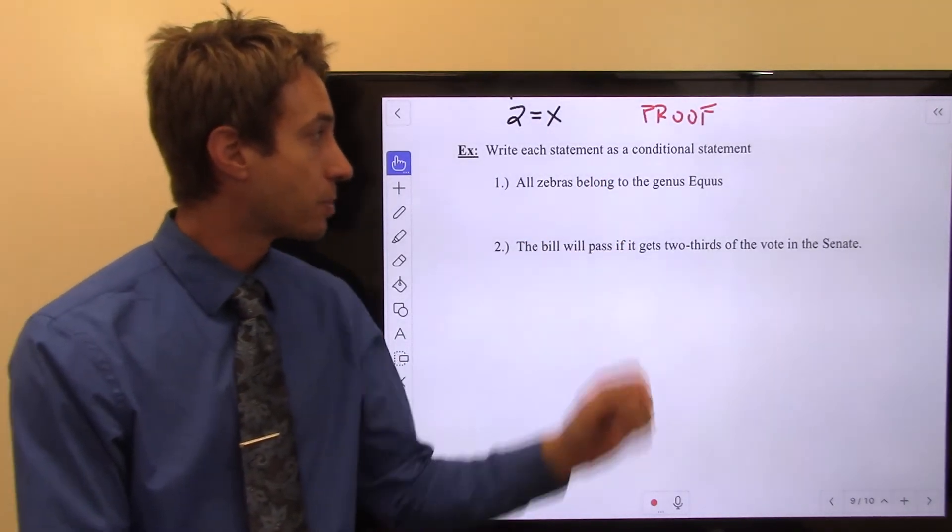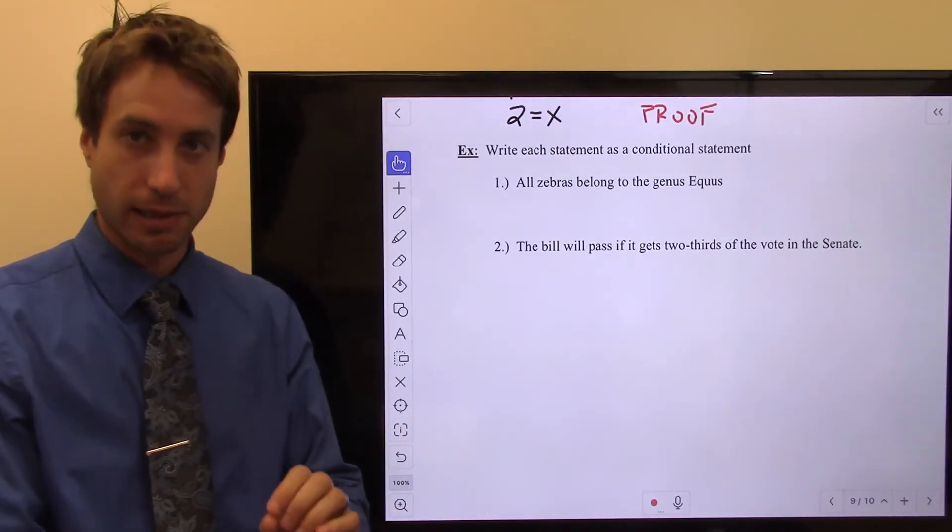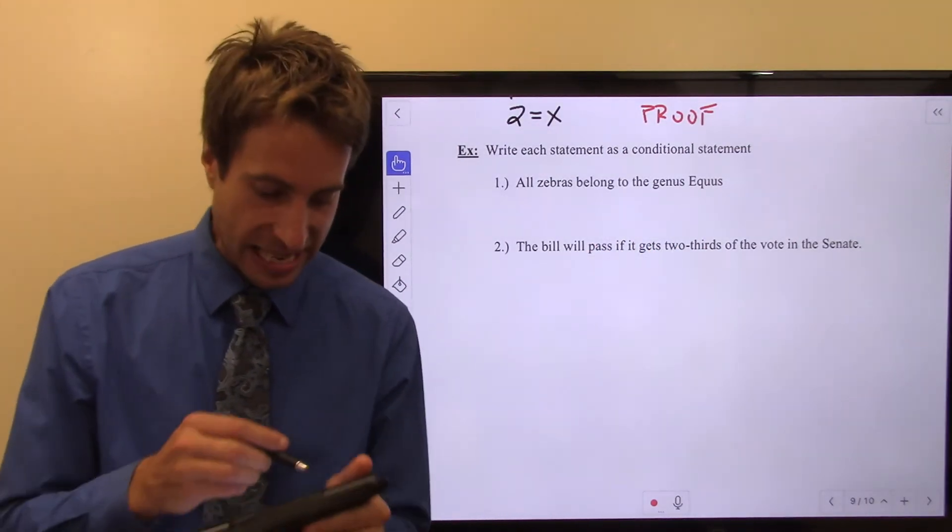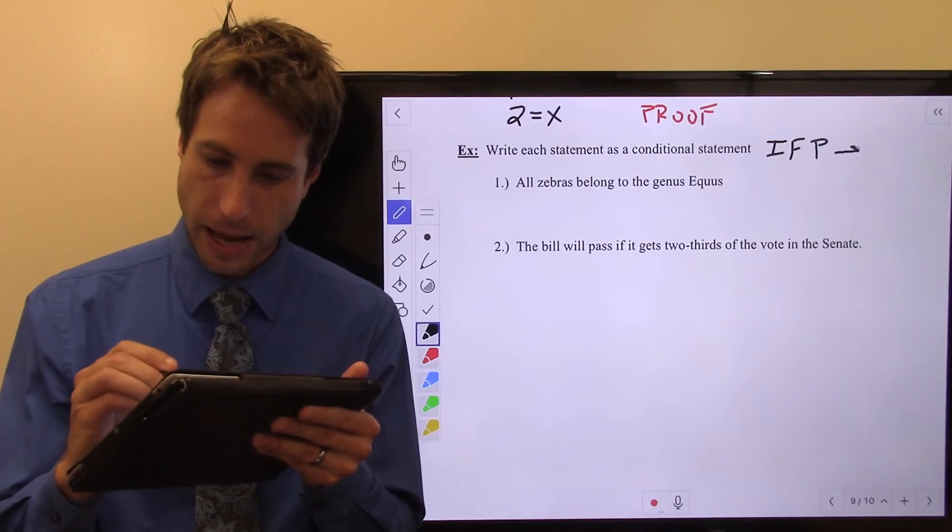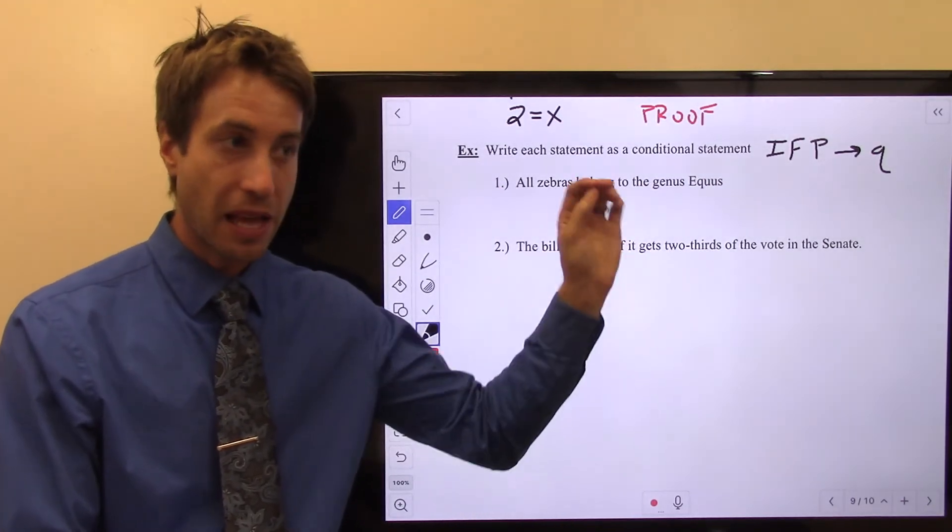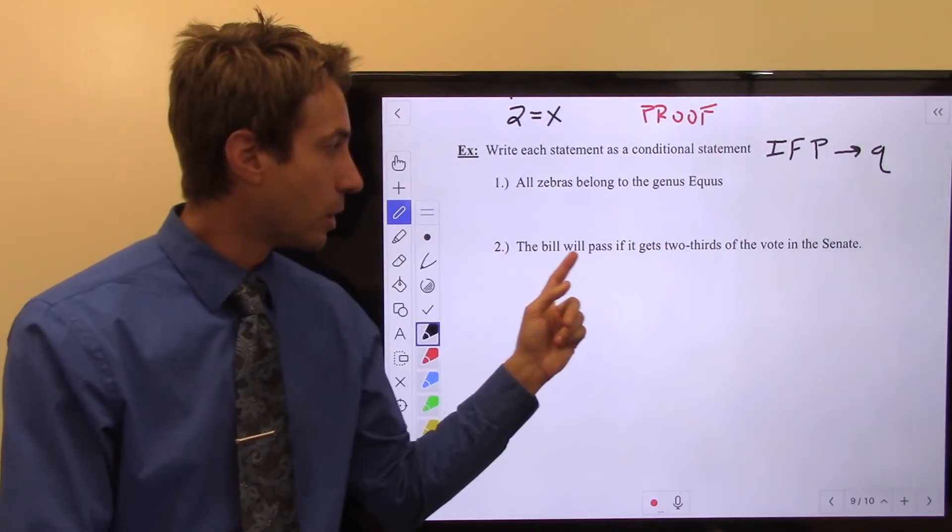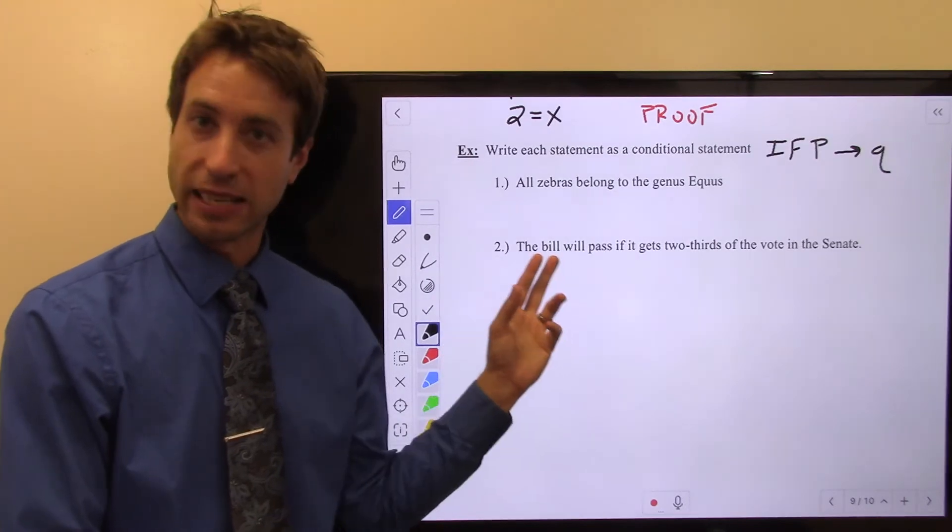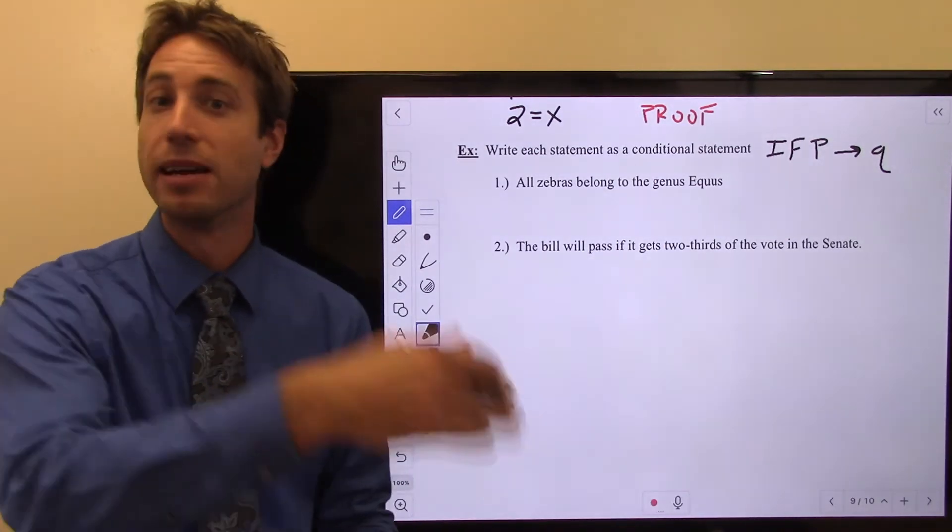All zebras belong to the genus equus. You want to write a conditional statement. Remember, conditional statement is if P then Q. So how would you do that? Simple. If it is a zebra, then it belongs to the genus equus, right? Next one. The bill will pass if it gets two-thirds of the vote in the Senate. What a conditional statement? Very simple. If a bill gets two-thirds of the vote in the Senate, then the bill will pass. Right? Conditional statement. If P then Q.